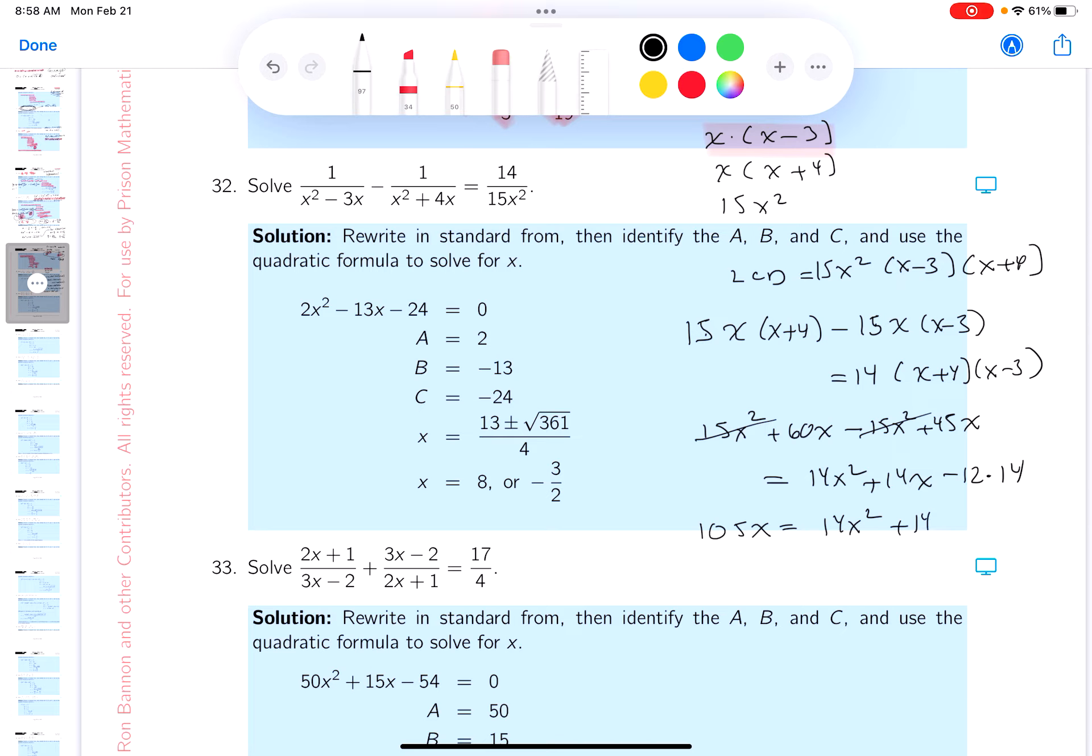Well, these disappear. And, oh boy, I got some work to do, don't I? And you're going to get 105 equals 14x squared plus 14x minus 12 times 14. And I'm going to divide both sides by 7, just to make it easier on me. And 7 goes into 105 17 times. Oh, no, 15 times. Sorry.